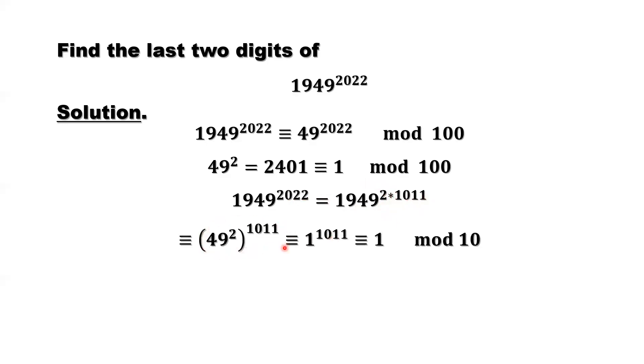Write it down this way. We already have this result here. To consider this number's last two digits, we only need to consider 49 to the power of 2022 last two digits.